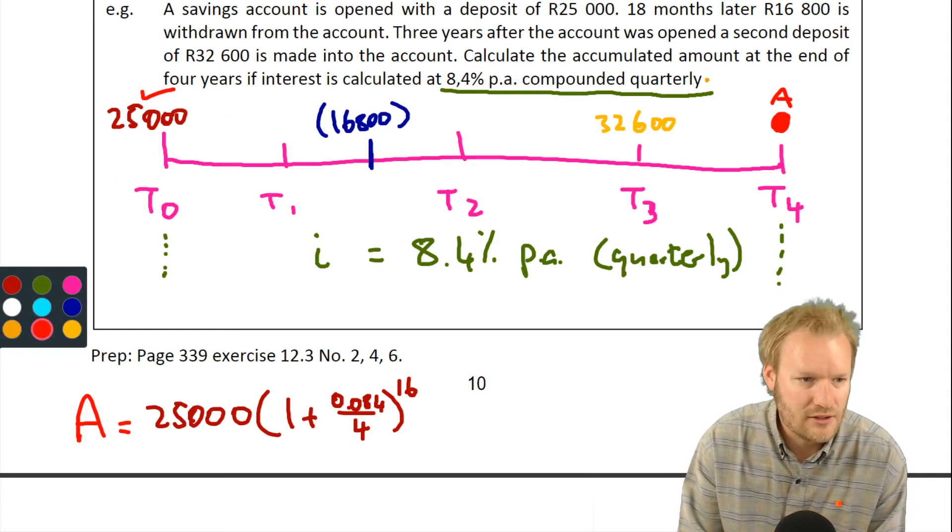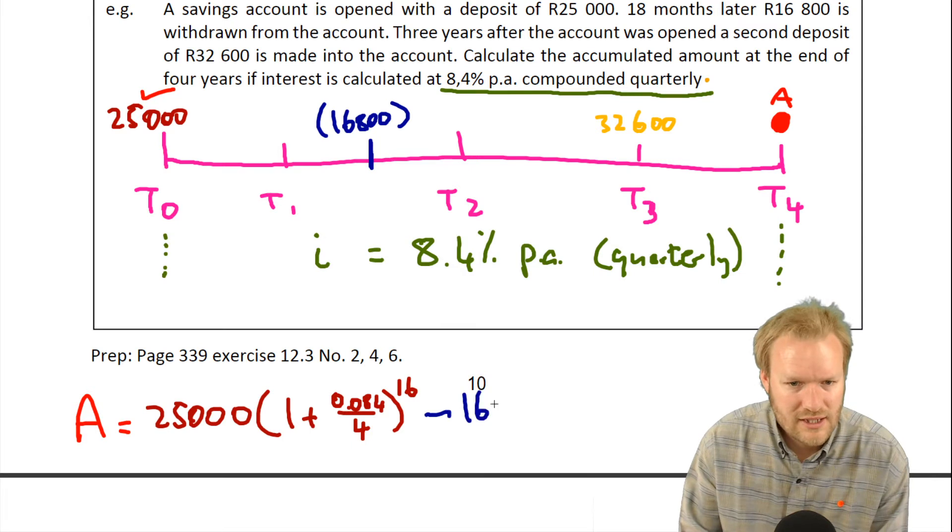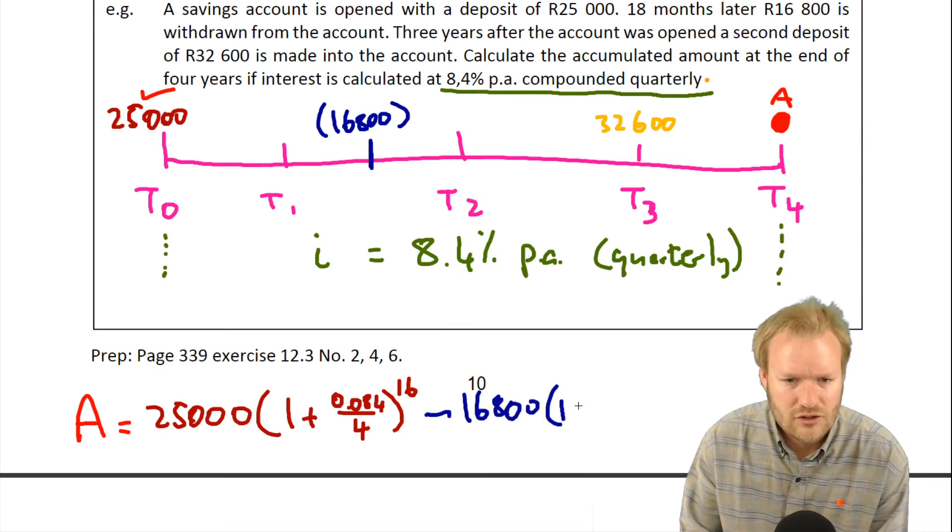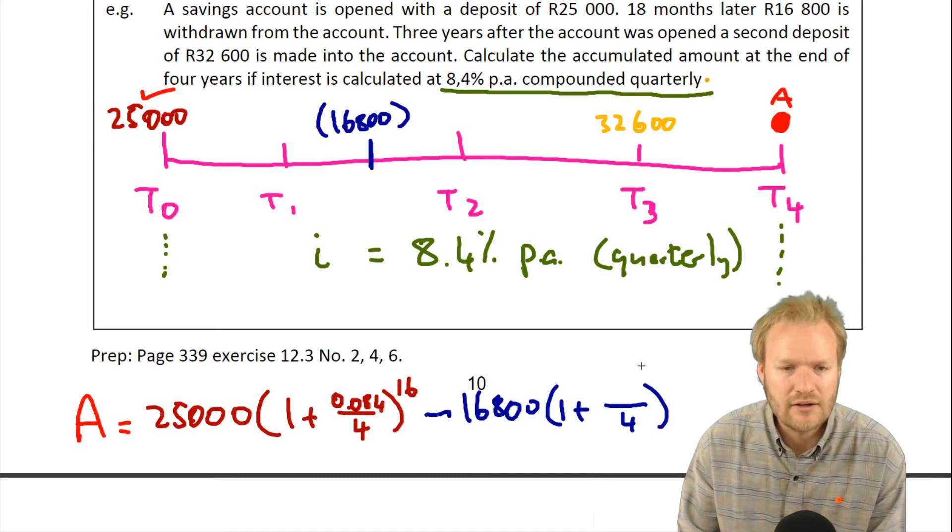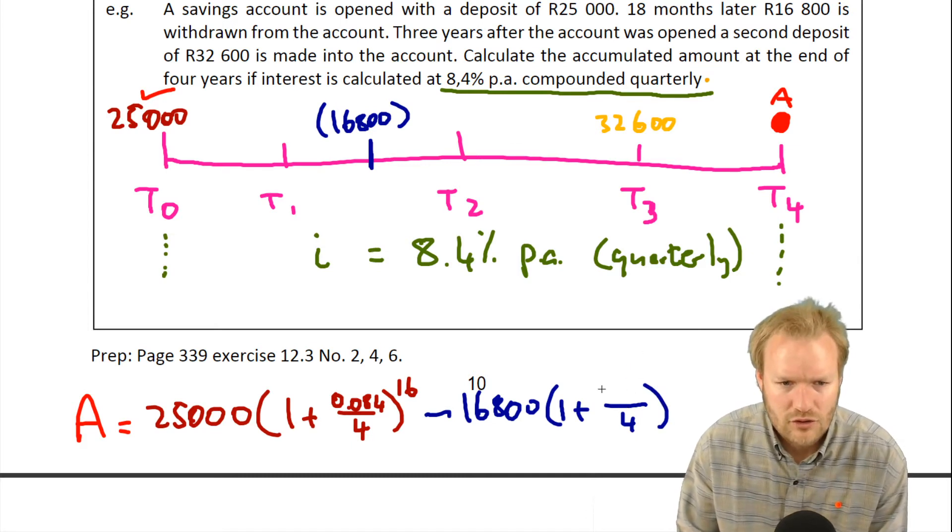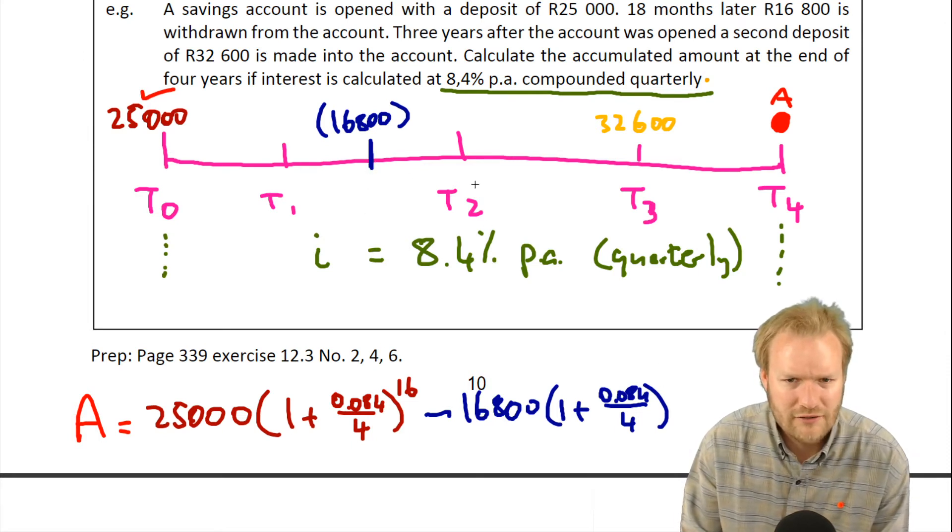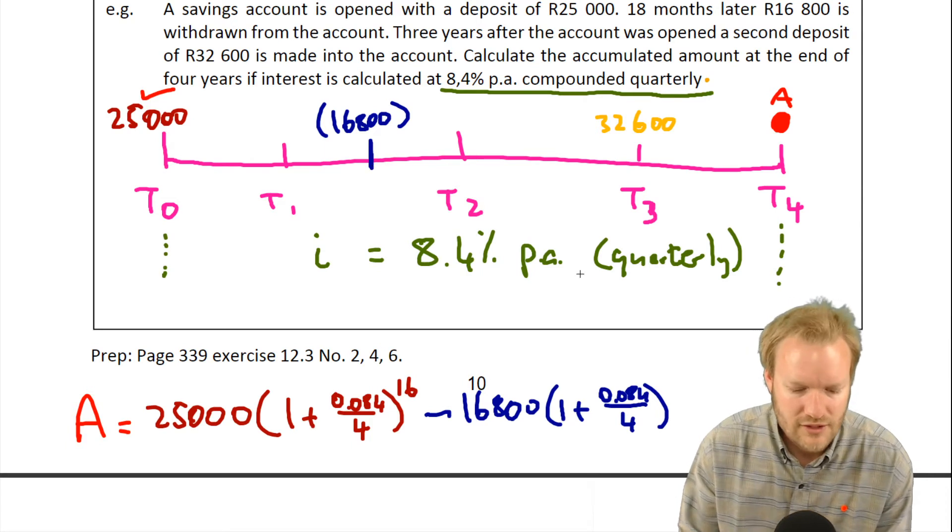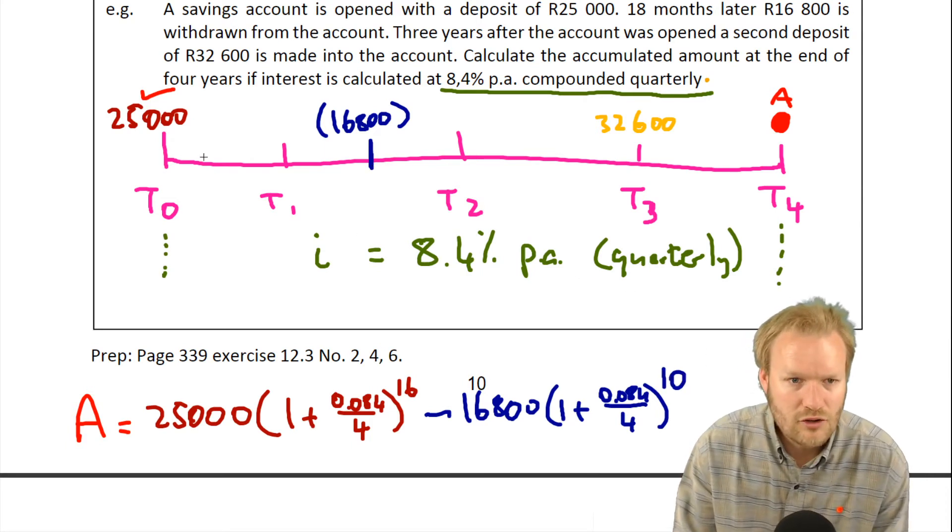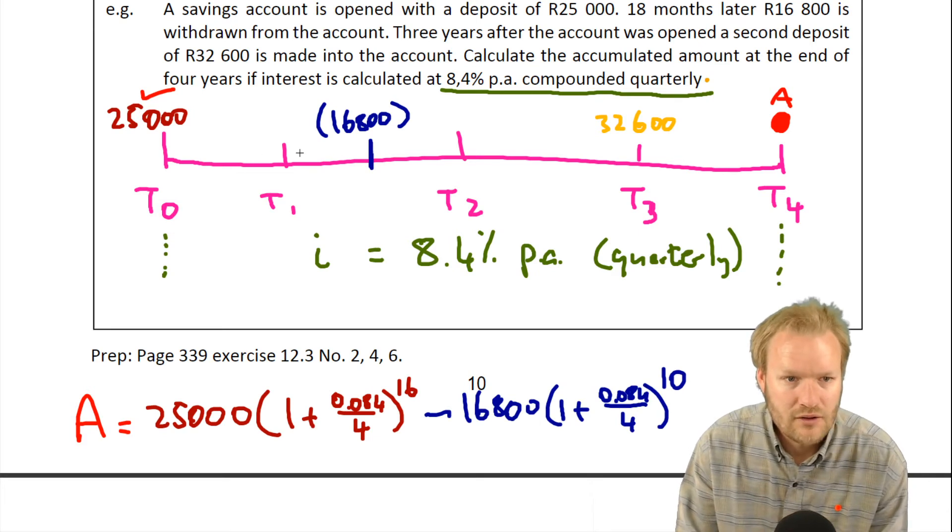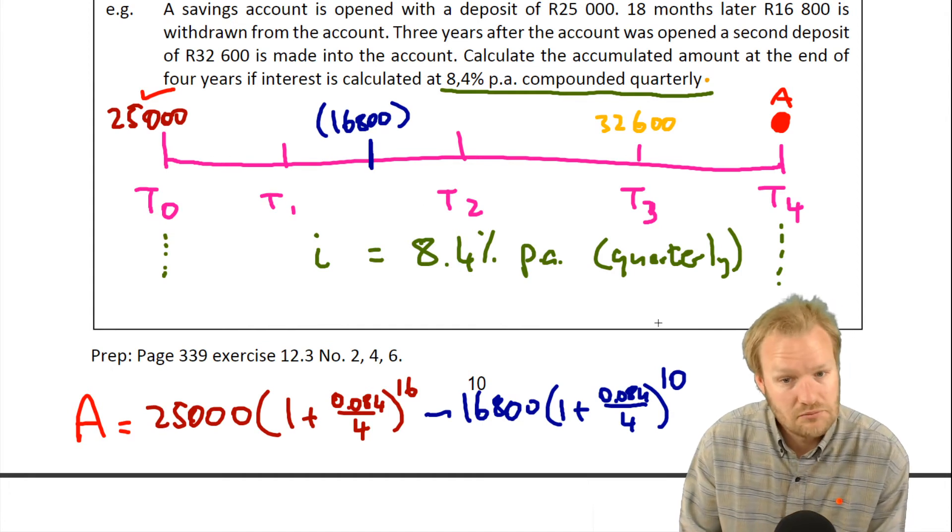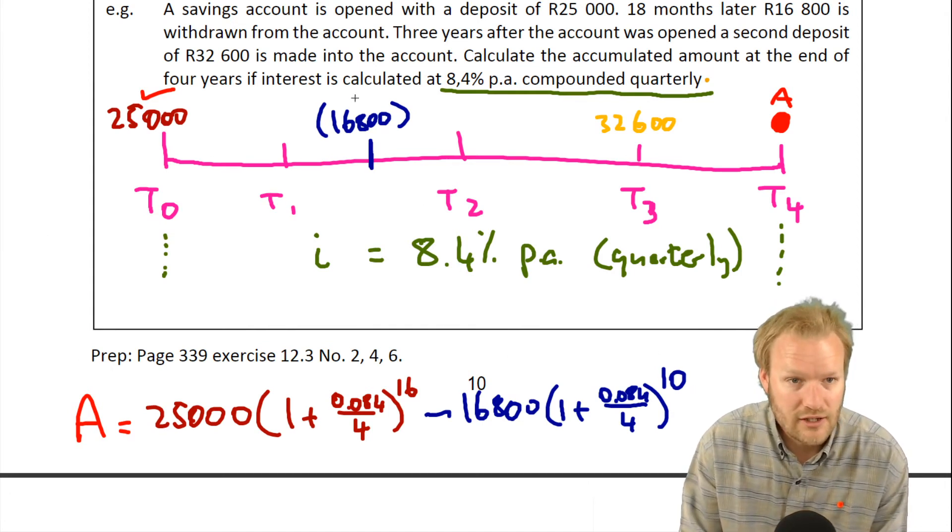Now we need to deal with this amount. Let's subtract the 16,800 along with all the interest that it would have accrued if we had left it in the bank. So it's over four, it's 0.084. This one's in four. That was half a year. So we've got one full year, two full years, two and a half years. Two and a half times four gives us 10, I think. Or we could have said that this is a year and a half, so we've got 16 altogether minus the six. Either way, we get to the power of 10.